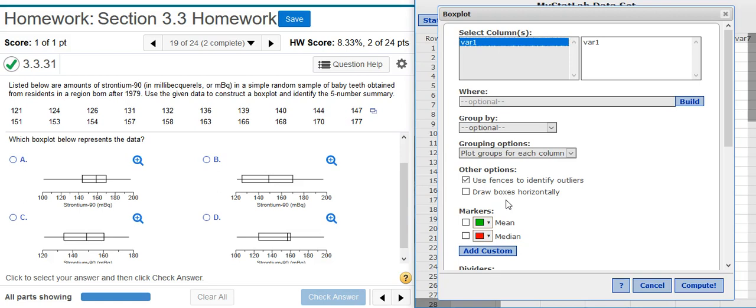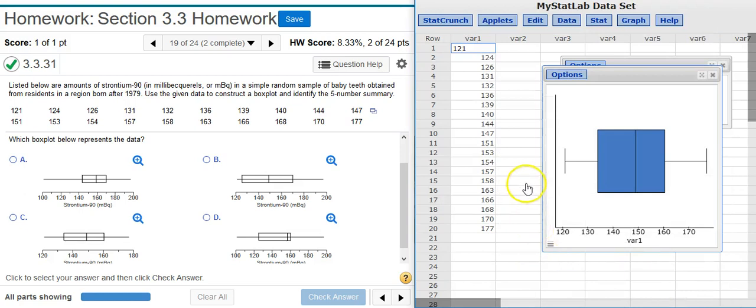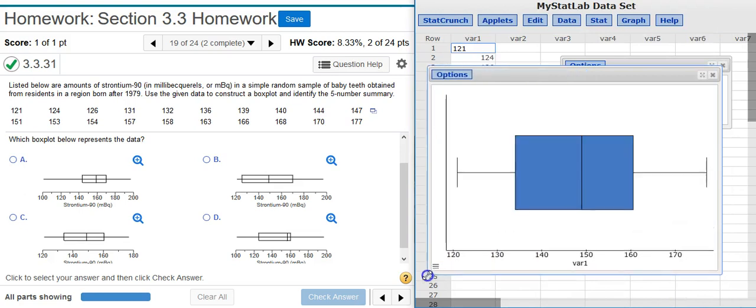...but for all the homework assignments that you're going to have here, the box plots are drawn horizontally. So you want to come down here under Other Options and click this box next to draw boxes horizontally. The other default options are fine for our purpose, so we're going to select Compute. Now here we have our box plot.